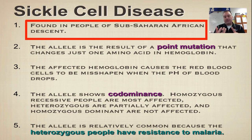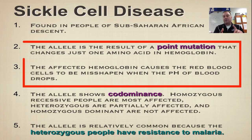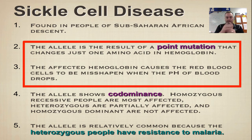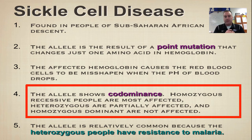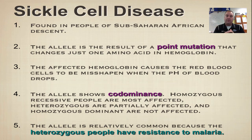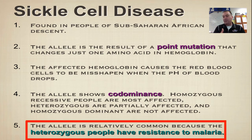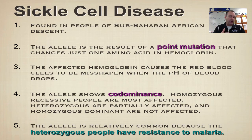Sickle cell disease is an inherited disorder typically found in people of sub-Saharan African descent. The allele is the result of a point mutation which causes hemoglobin, under a low pH in your blood, to change its shape and form a curve or sickle shape. This also shows codominance. Heterozygous individuals have some red blood cells of the sickle variety and others that are normal. If you're heterozygous you don't show the disease, but you do have resistance to malaria. Sickle cell disease has a heterozygous advantage, and we'll talk about this again when we get to evolution.